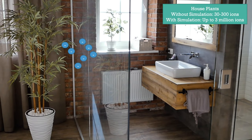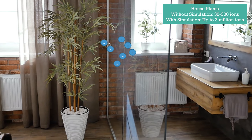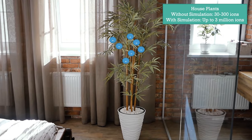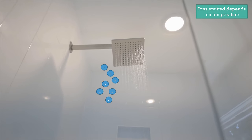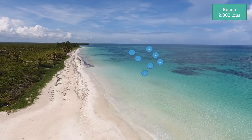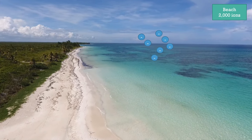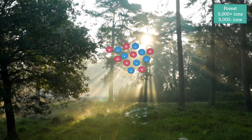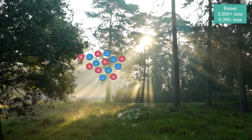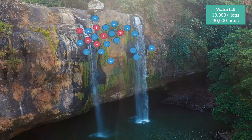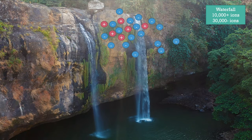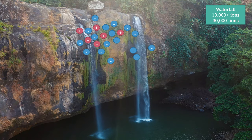Houseplants themselves emit ions, and you can buy an electrical device that increases that number drastically. Both hot and cold water showers produce ions. You can find 2,000 ions at the beach. Forests tend to have an equal number of positive and negative ions. Waterfalls are where you find the most ions — you can get 30,000 negative ions at a waterfall.